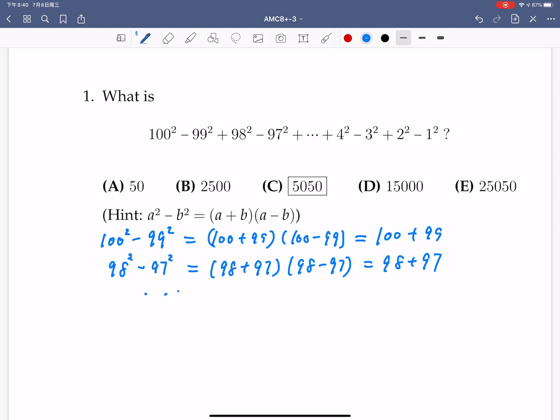So the answer is 98 plus 97. So if we keep doing things like that, eventually, suppose this is equal to A, then A should be equal to 100 plus 99 plus 98 plus 97, all the way down to the last term corresponding to 2 plus 1. So this is the famous problem. What is the summation of positive integers from 1 through 100? So the answer is half times 100 times 101, which is 5050. So the answer is C for the first problem.